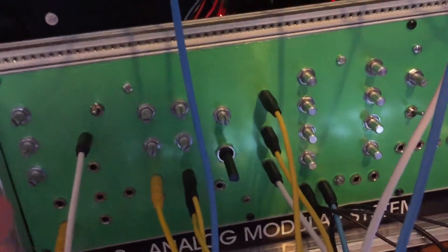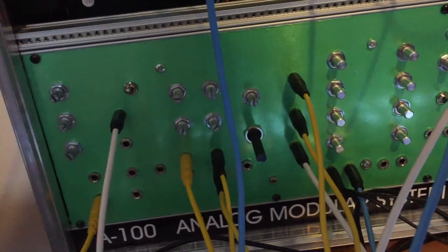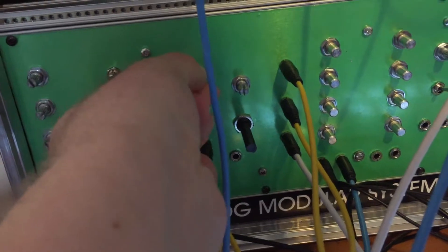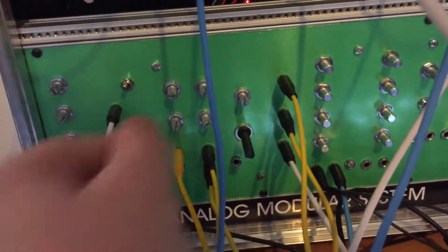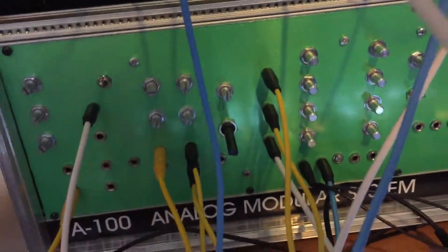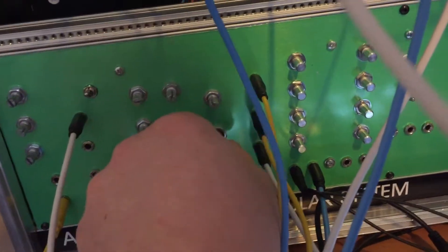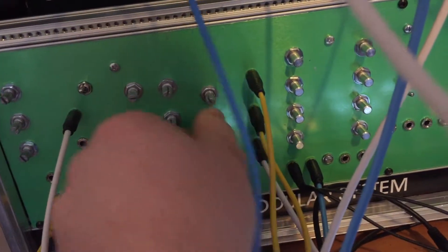For now I can memorize where the spots are. I know this is the resonance, this is the CV amount there, and the cutoff and filter type selection.